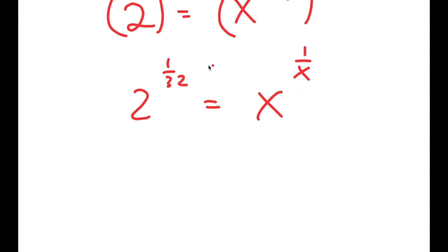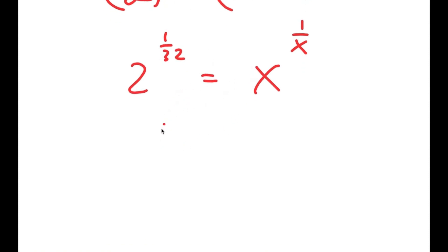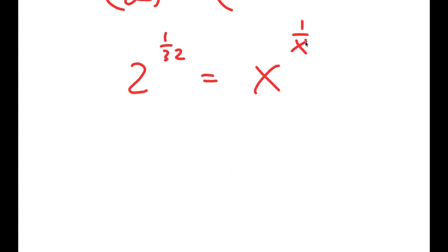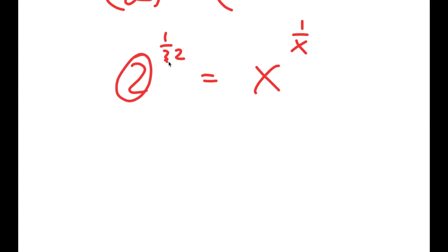Now we want to simplify this, because our end goal is to make this in the form a to the power of 1 over a is equal to b to the power of 1 over b. In that case, a is equal to b. We already have x to the power of 1 over x on the right side, so we just need to make the left-hand side be in the form a to the power of 1 over a — meaning this number here has to equal this number.